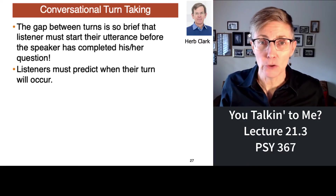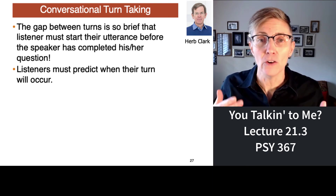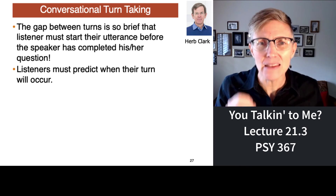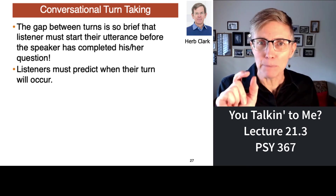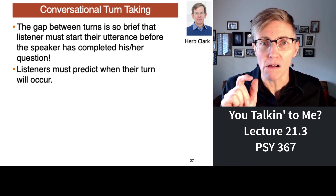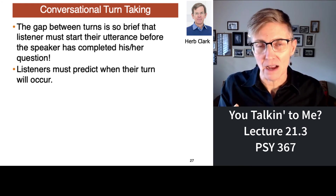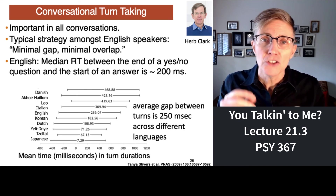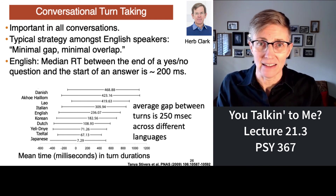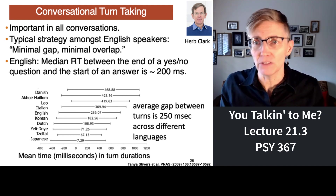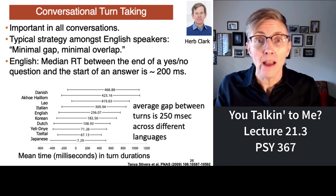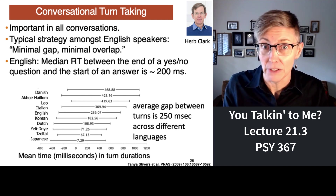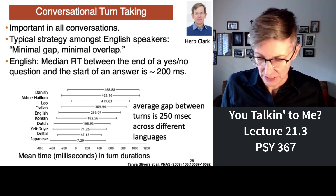In addition to building common ground, people in a conversation have to figure out who speaks when — or who signs when. It turns out that this turn-taking thing is amazingly precise. The gaps between speakers or signers is so small that somebody has to predict when they can jump into the conversation before the other person has finished. The average gap is only 200 milliseconds. It depends on the country — some countries have longer gaps, like the Danish, who have a gap of half a second. In Japan, the gap between turns is only seven milliseconds, which is amazing. On average, it's about 250 milliseconds.